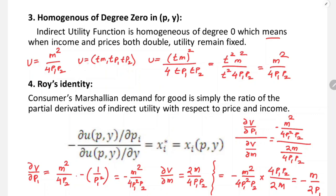We can write: V(tM, tp1, tp2) = V(M, p1, p2). Using our example, V = M²/(4·p1·p2), substituting tM, tp1, tp2 gives (tM)² / (4·tp1·tp2).